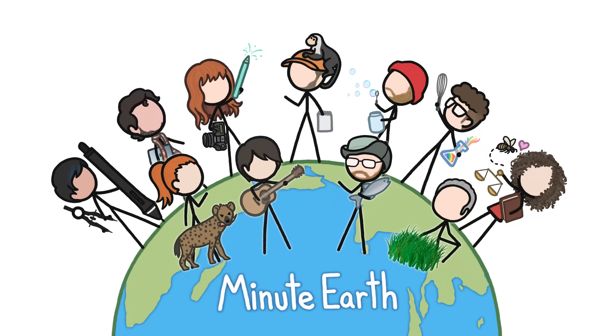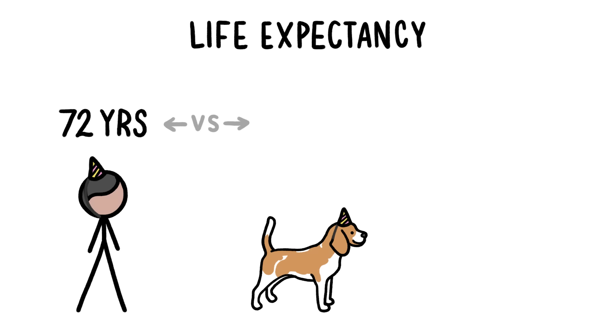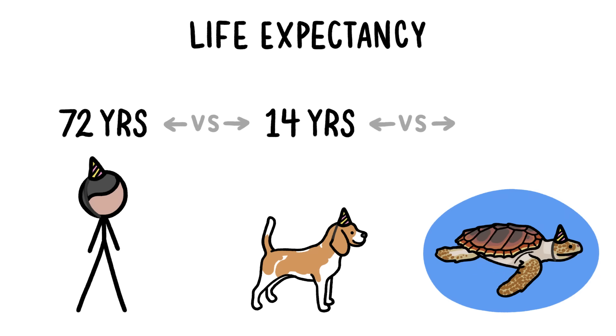Hi, this is David from MinuteEarth. If you look up the life expectancy of a human, you'll find that it's about 72 years. For a dog, you'll find that it's about 14 years. And for a loggerhead sea turtle, you'll see that it's about 80 years.